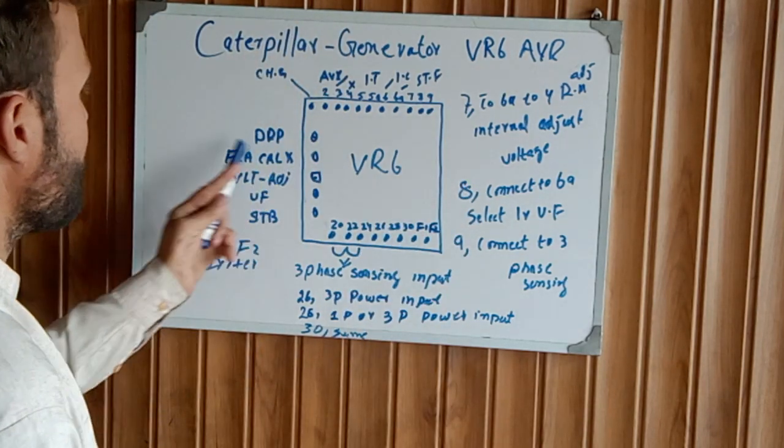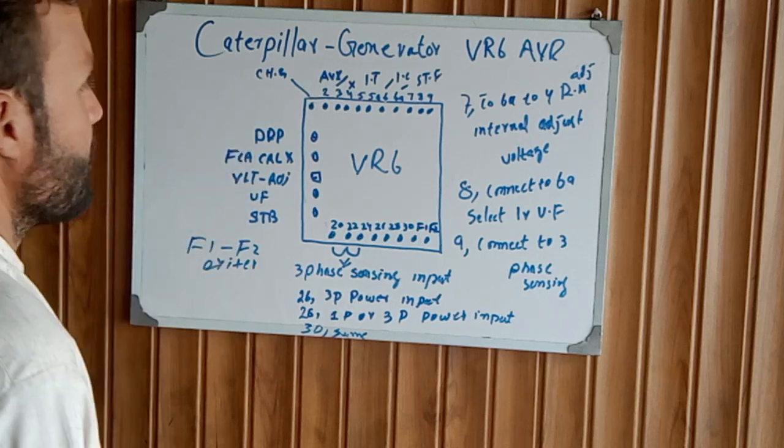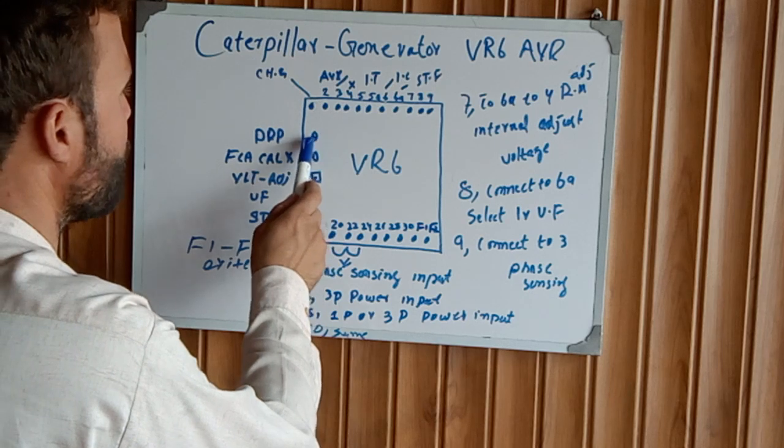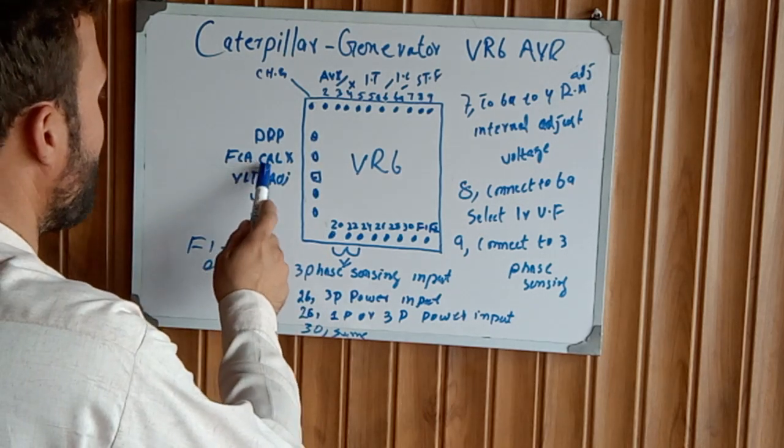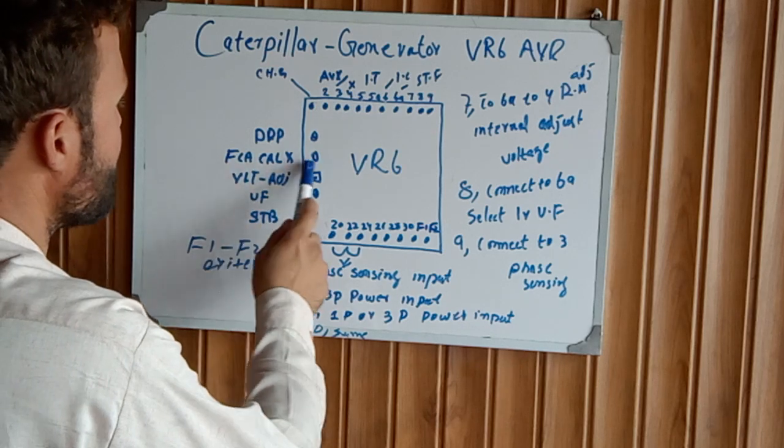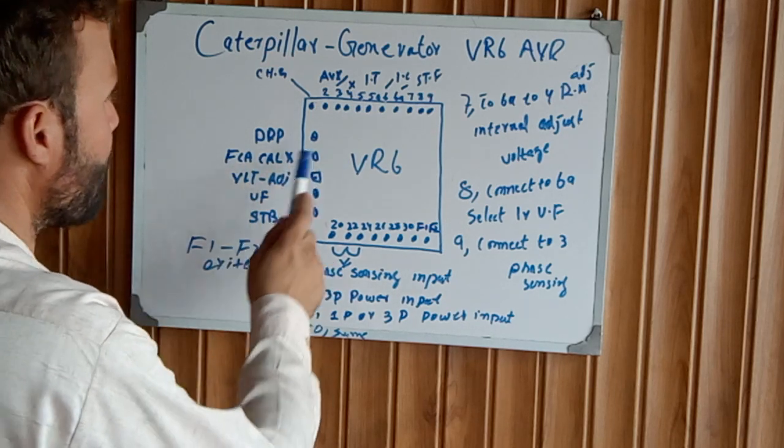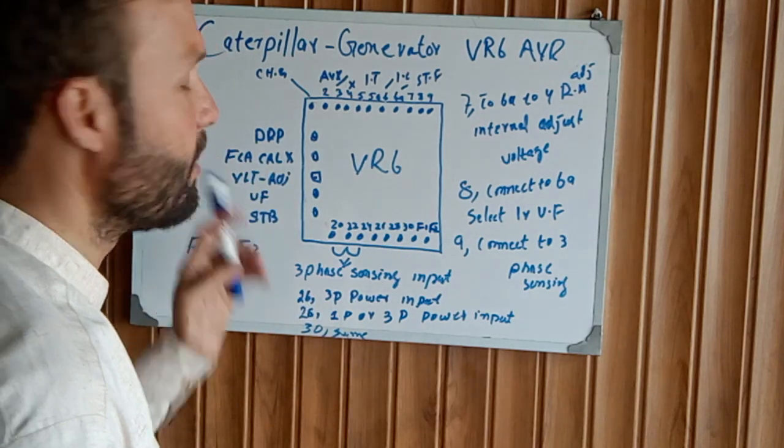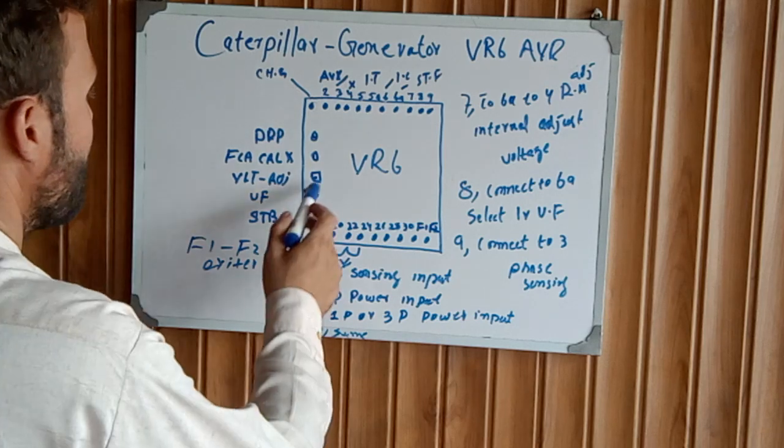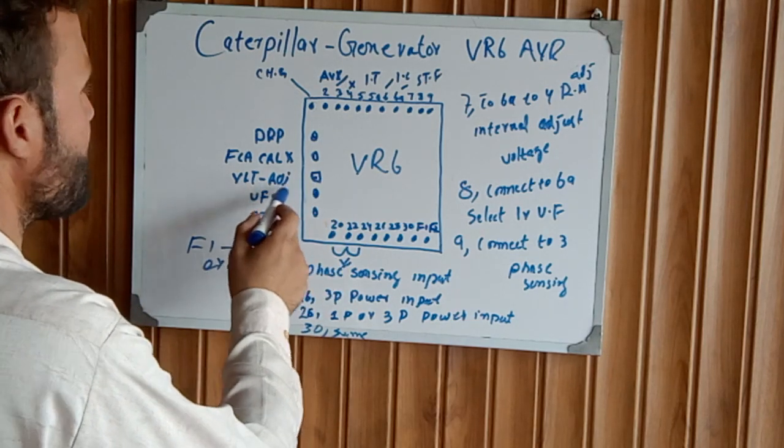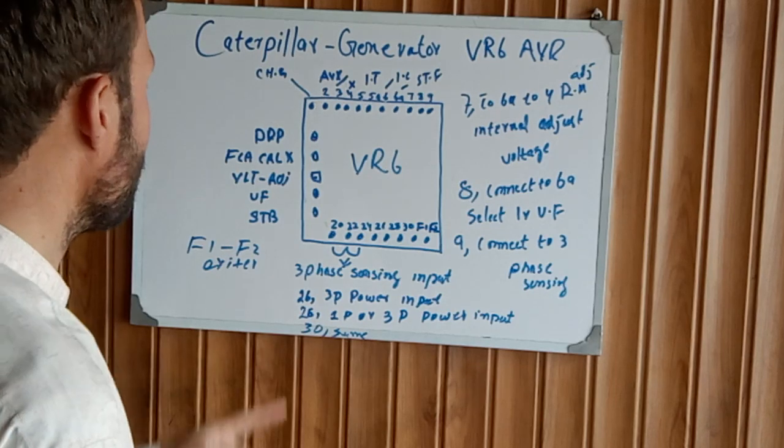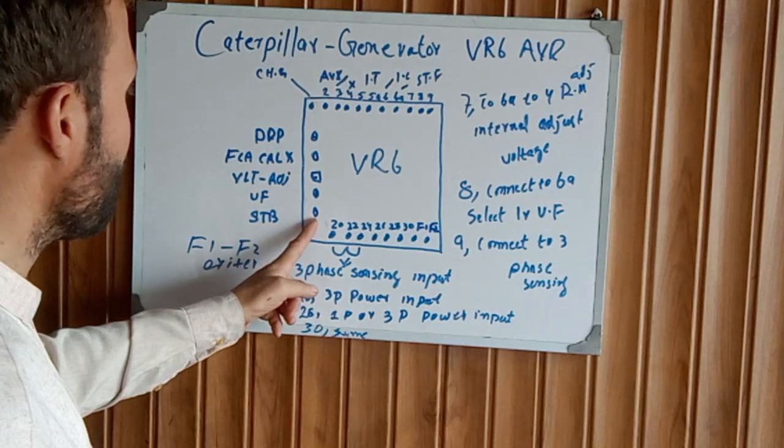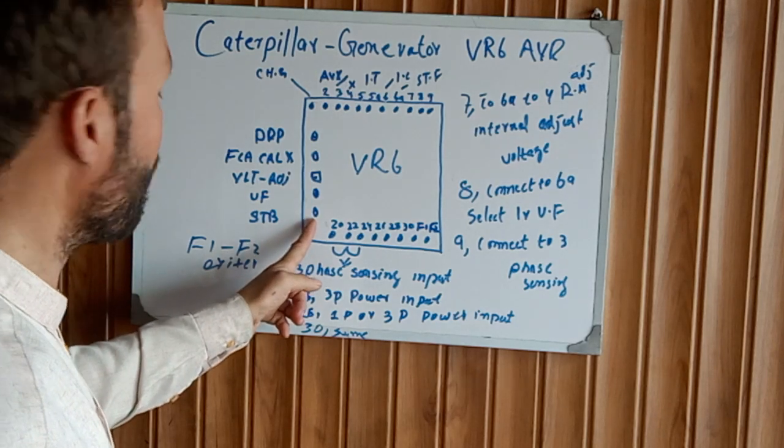This is the top terminals. The left side adjustable, this is for the droop setting. This small potentiometer, FCA CAL, this is the company adjustable. It doesn't need to be adjusted. This is the factory adjustable. This one, the third one, is voltage adjustable potentiometer. And this one is the under frequency adjustable potentiometer. And this one is for the stability of the voltage.